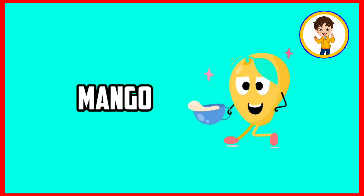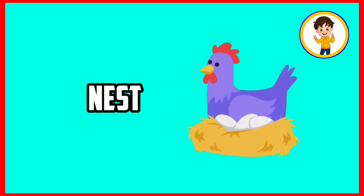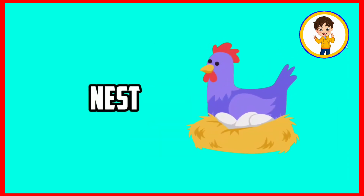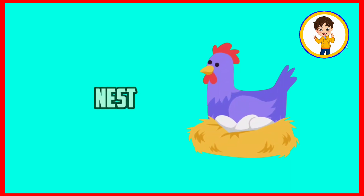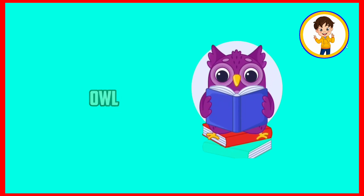M. M is for mango. Mango means arm. N. N is for nest. Nest means guhunsla. O. O is for owl. Owl means ullu.